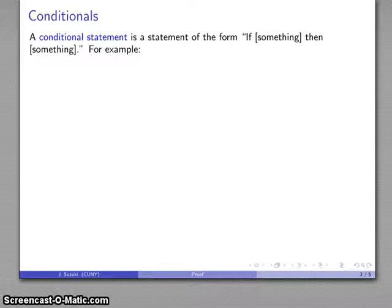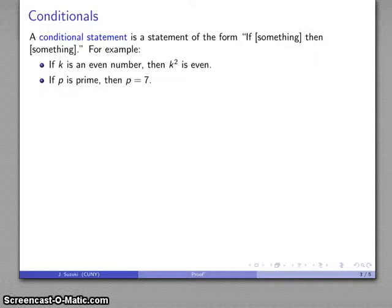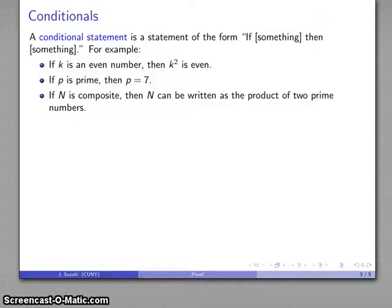One of the things that we'll be proving are conditional statements, and these are actually fairly common. They are statements of the form if something, then something. For example, if k is an even number, then k squared is even. Or if p is prime, then p is equal to 7. Or if N is composite, then N can be written as the product of two prime numbers.